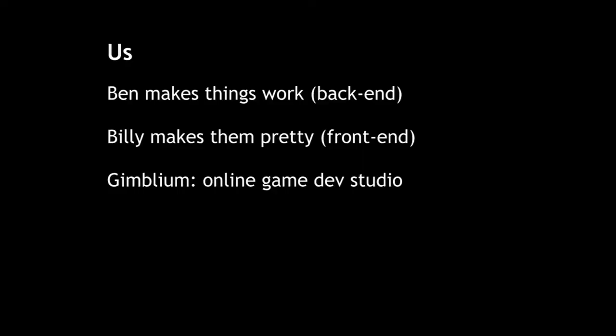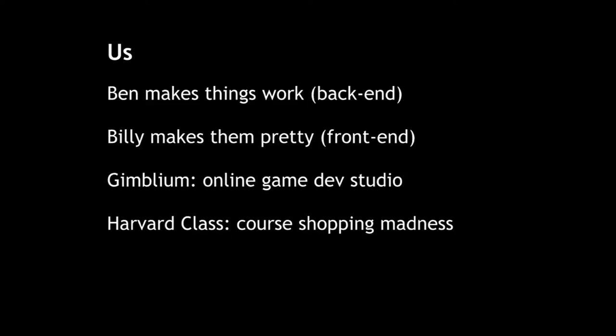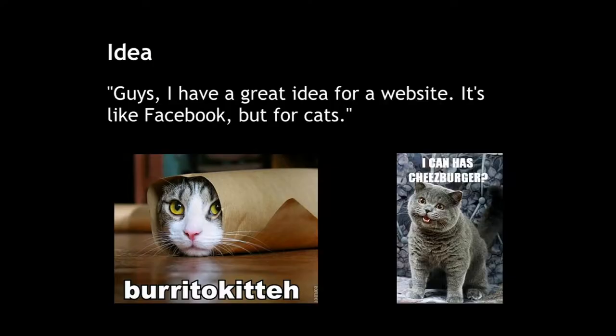Together we've made a few things. For CS50 last year, we worked on Ghiblium, which is an online game development studio — that was our final project for the class. Since then, we've made Harvard Class, which is an online framework for browsing and shopping courses at Harvard. We're going to start with this idea for our website: we're going to make Facebook, but for cats. Before you actually make this website — don't make this website because it's not good — but we'll use it as a framework and go through the process of how we take this idea and turn it into a real website.